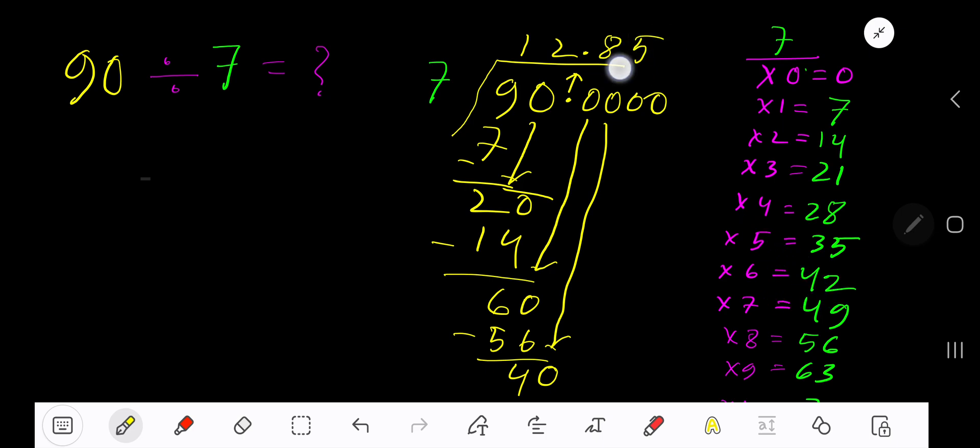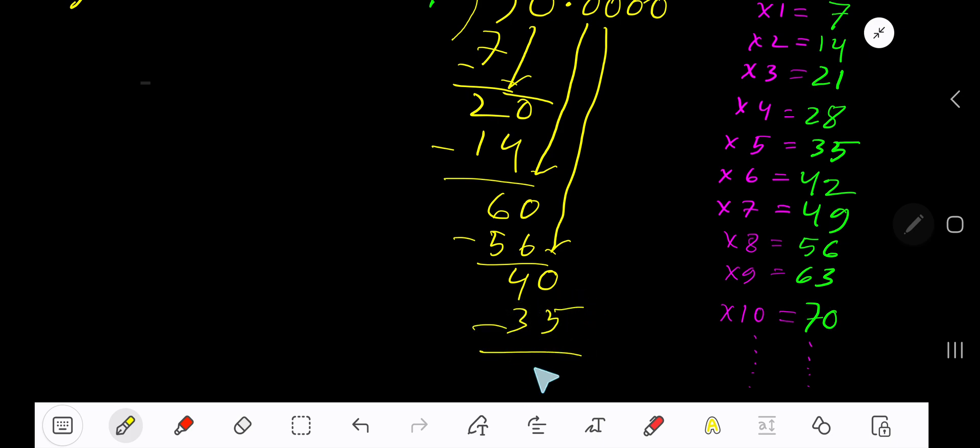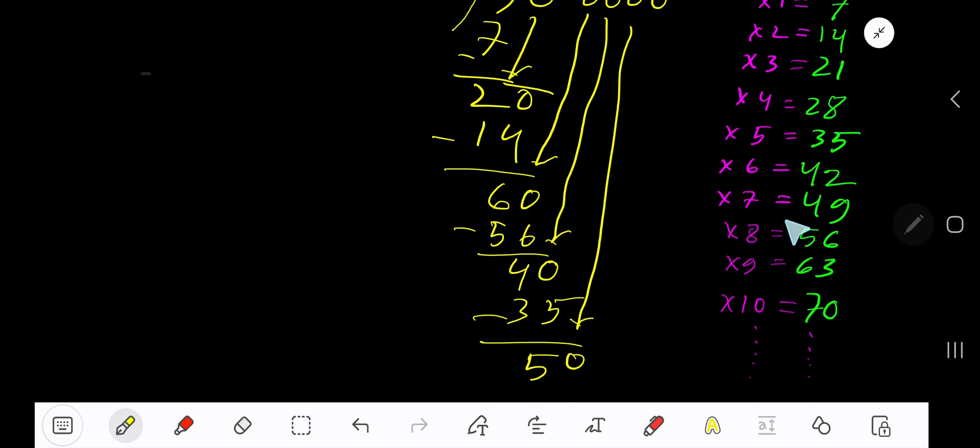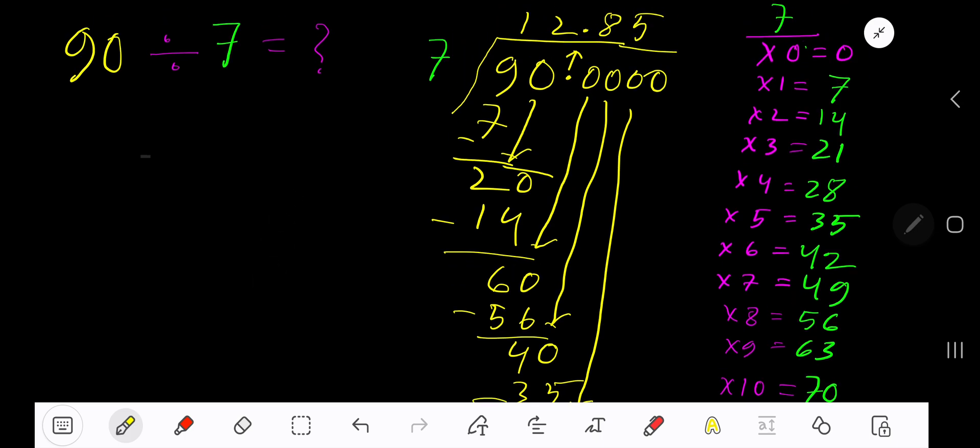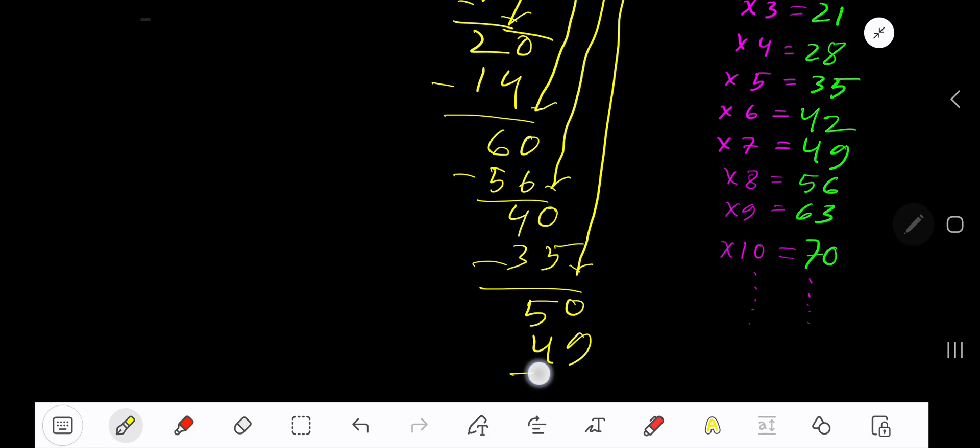5 times 7 is 35, subtract to get 5. Bring down another 0, 50. 7 goes into 50 how many times? 8 times 56 which is greater, so 7 times. Write 7 here. 7 times 7 is 49, subtract to get 1.